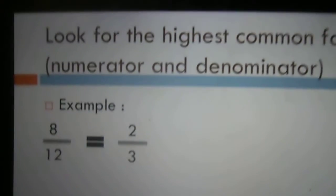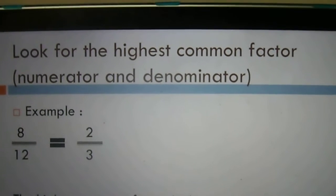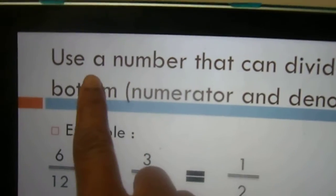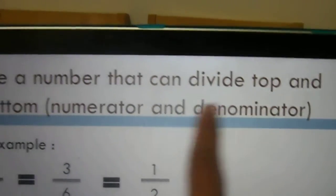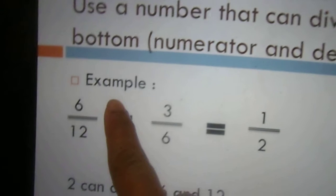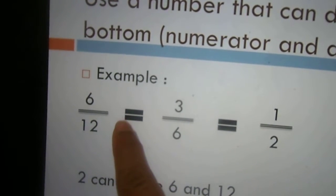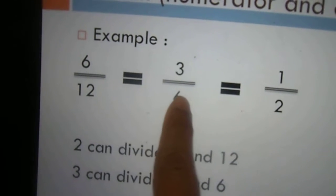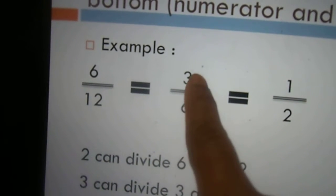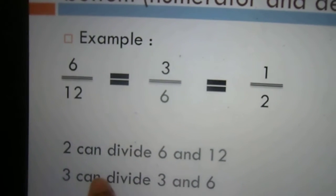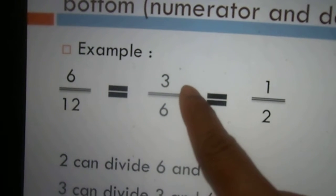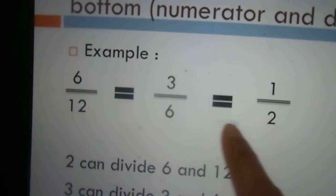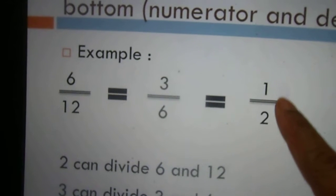Let's look at a different example using the same steps. Remember, the first step says use a number that can divide the top and the bottom. We have 6 over 12. 2 can divide 6 to give 3, and 2 can divide 12 to give 6. Then we look for a number that can divide 3 and 6 again. 3 can divide both: 3 divides 3 gives 1, and 3 divides 6 gives 2. So the answer is 1 over 2.